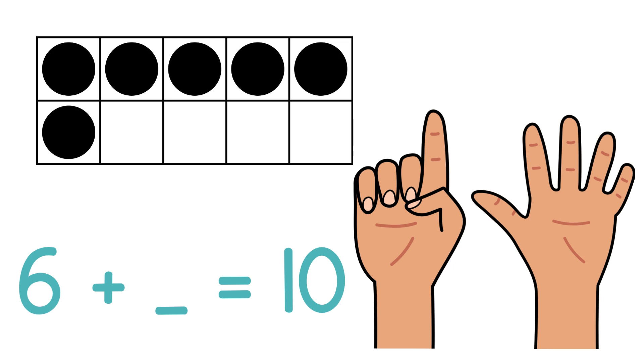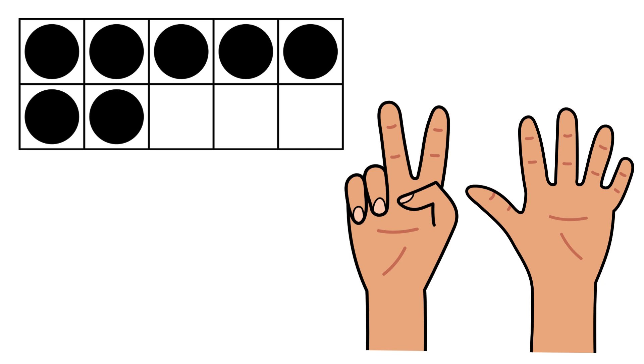So 6 plus 4 equals 10. Now we have seven circles, or seven fingers up. How many fingers are down? Three. 7 plus 3 makes 10.